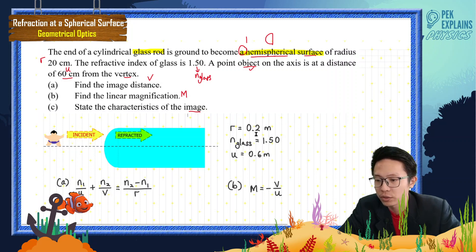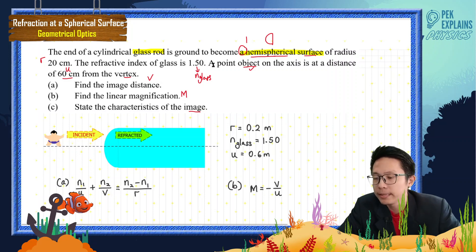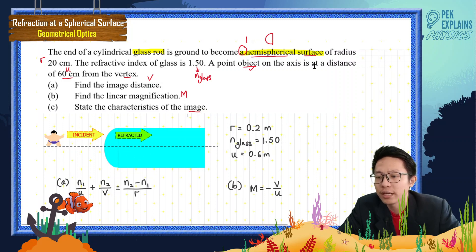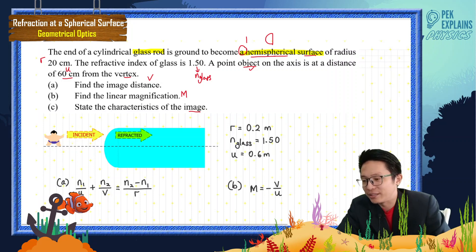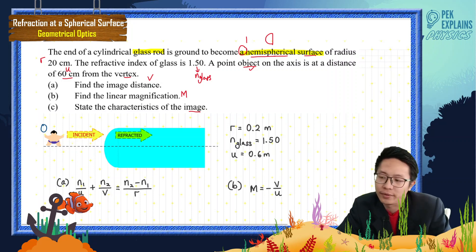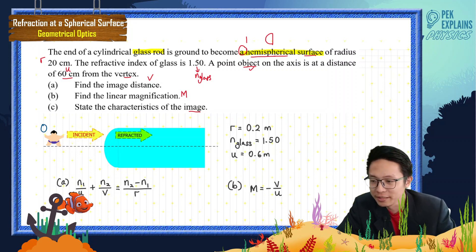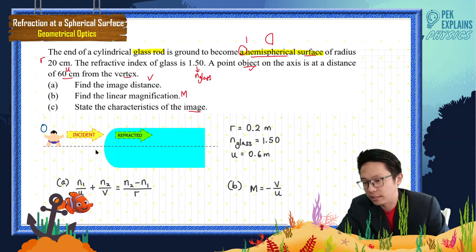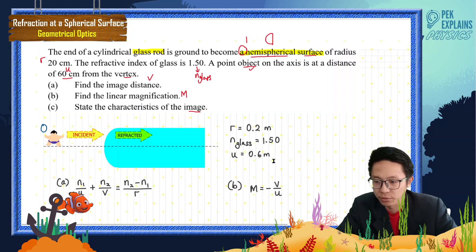The refractive index of glass is 1.5. The point object is at a distance of 60 cm from the glass surface, so U equals 0.6 meters. I like to draw an actual object rather than just an arrow — this object is 60 cm from the glass surface, which is U equal to 0.6 meters.